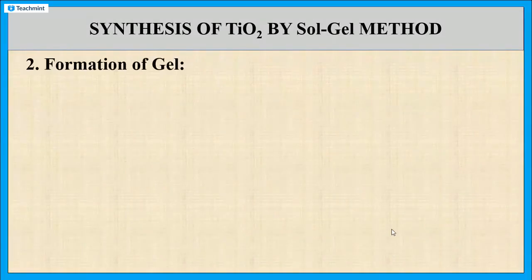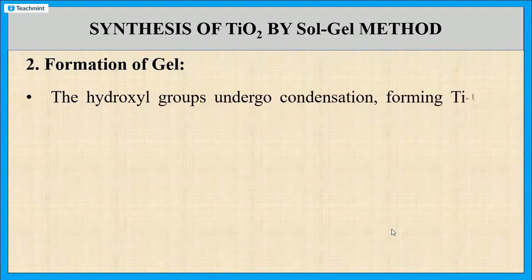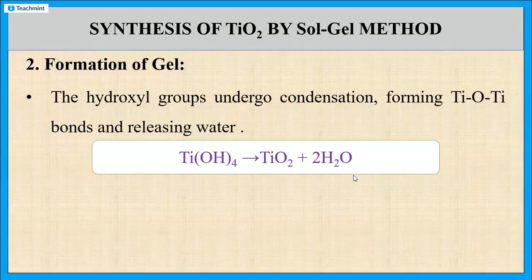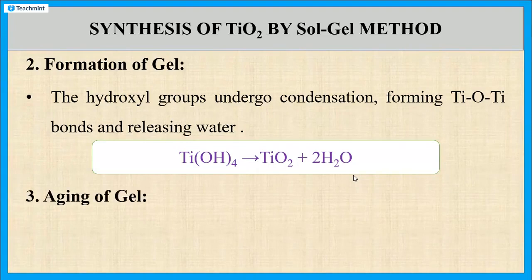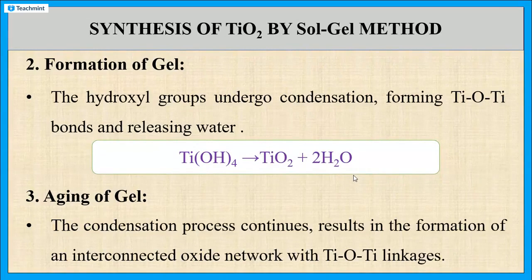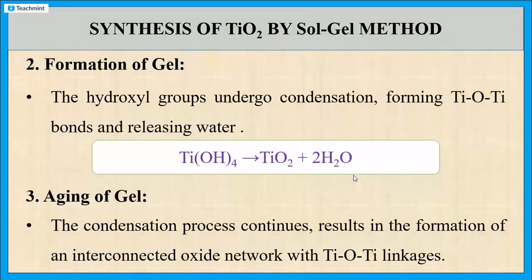The second step is the formation of gel. Here the self-condensation of titanium hydroxide takes place. Ti(OH)4 molecules react with each other, forming titanium dioxide along with the elimination of water molecules. This reaction leads to the formation of gel as well as the growth of nanoparticles. The third step is aging of gel. Here the condensation of titanium hydroxide continues, resulting in the formation of more and more titanium-oxygen-titanium bonds, which link together forming an interconnected oxide network. The gel is left to age to strengthen the oxide network.